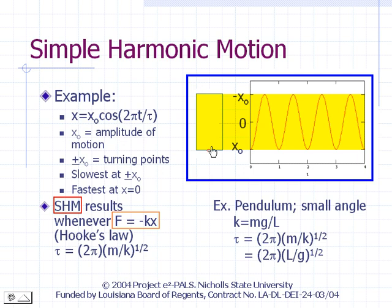It can be shown that the motion is a sinusoidal function of time and that the period of the oscillation is 2 pi times the square root of m over k, where m is the mass of the object and k is the force constant. An example of simple harmonic motion is a pendulum, as long as it does not swing too far from vertical. The force constant for a pendulum equals mg over L, where m is the mass of the pendulum bob, g is the acceleration due to gravity, and L is the length of the pendulum. The period of oscillation for a pendulum is 2 pi times the square root of L over g.